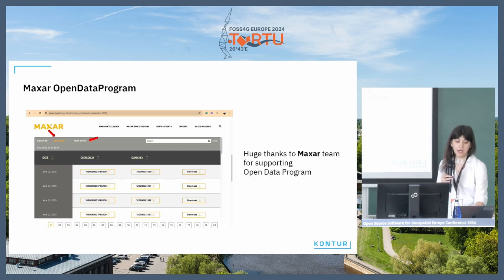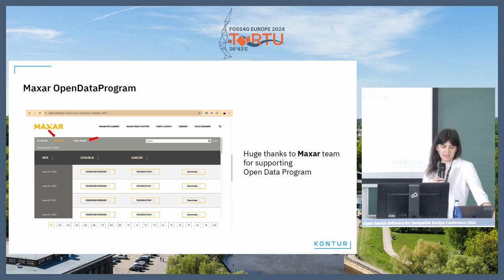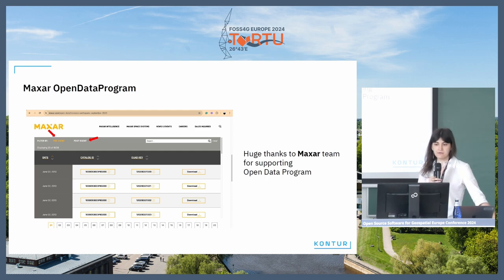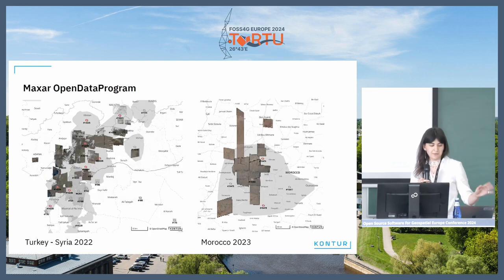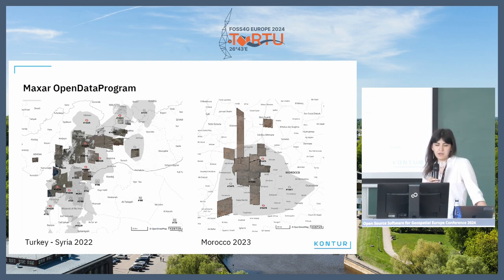I should mention Maxar because they have an open data program that makes imagery available during critical moments. It significantly aids in humanitarian response during disasters, and Maxar provides both pre- and post-event data, which is crucial for assessing losses. Despite difficulties in uploading imagery automatically — since the platform does not yet support the STAC catalog — thanks to many volunteers like Batuu, imageries can still be found on the platform.